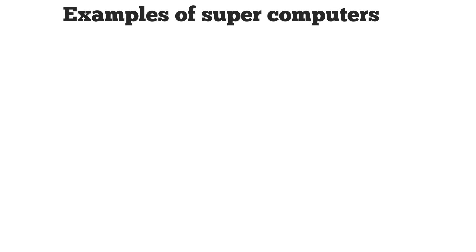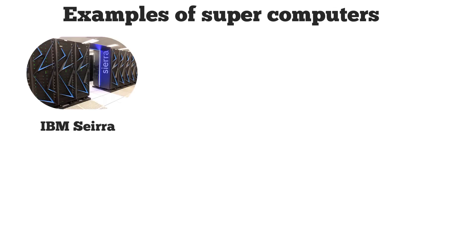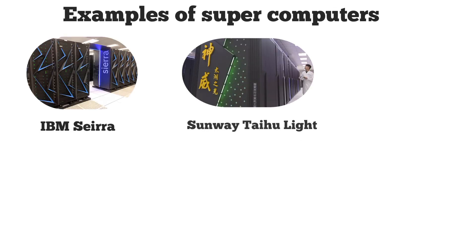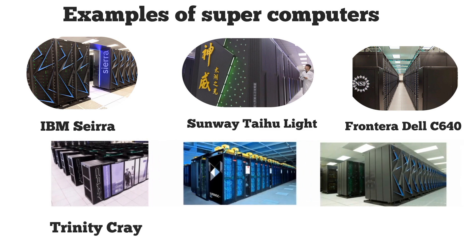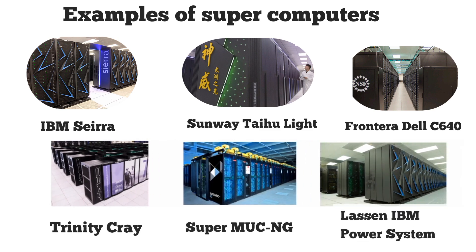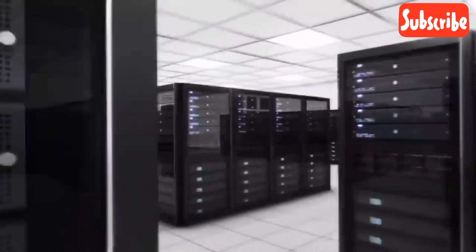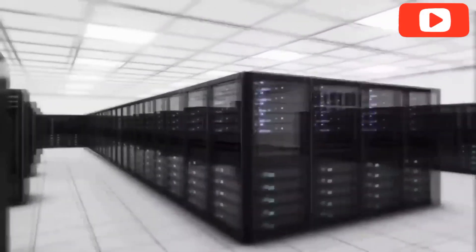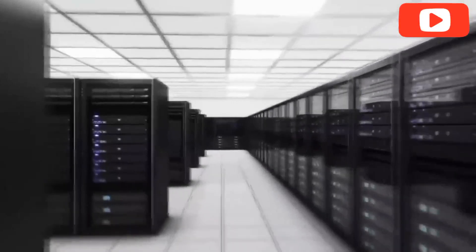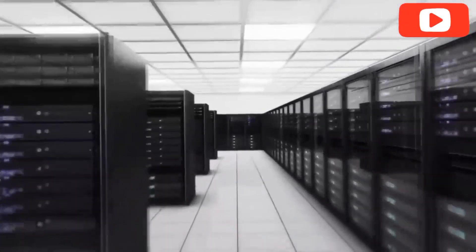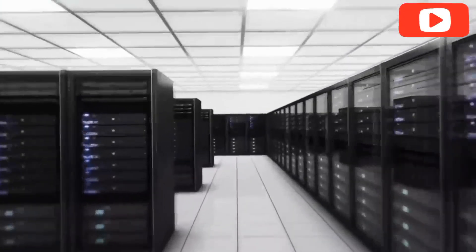Examples of supercomputers: IBM Sierra, Sunway Taihu Light, Frontera Dell C640 Dell EMC, Trinity Cray XC40, SuperMUC-NG, and Lawson IBM Power System. Supercomputers are faster machines and emit lots of heat and energy. Therefore, it is mandatory to use an air conditioner to keep the devices and components cool and avoid physical damages like burning and overheating.